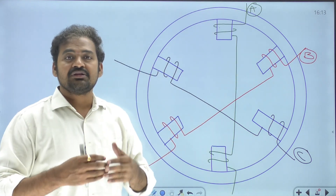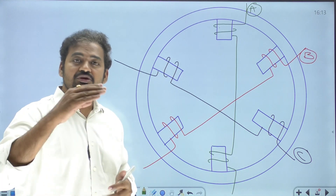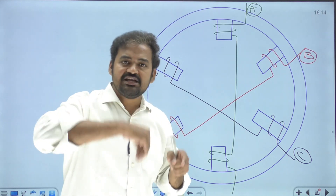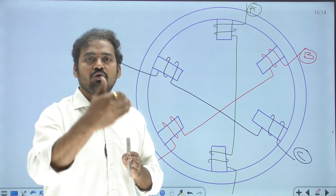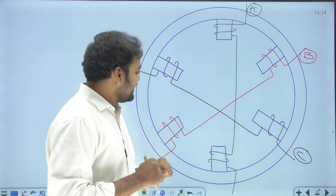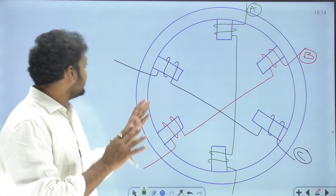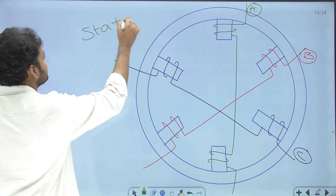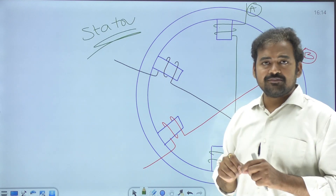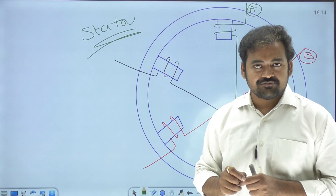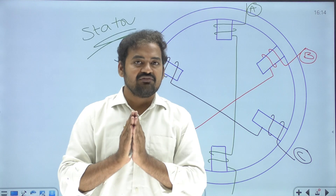We can use any number of stator poles based on the step angle required. With eight poles, we can use a four-phase winding; with ten poles, a five-phase winding. The number of phases depends on the number of poles on the stator. The summary about the stator is: stator is a salient pole design, stator poles are wound with concentrated winding, current pulses are given as input, and at any given point in time, only one phase winding will receive current.